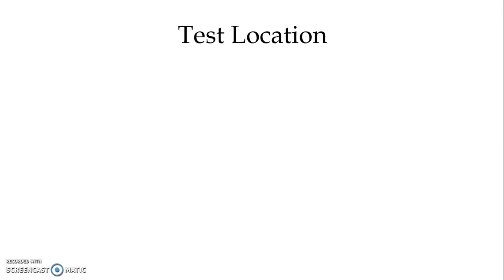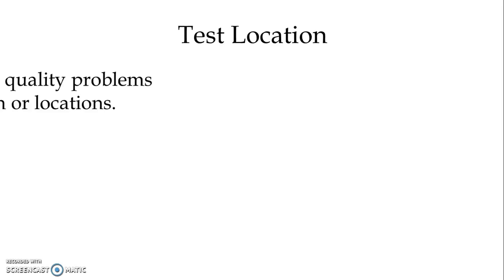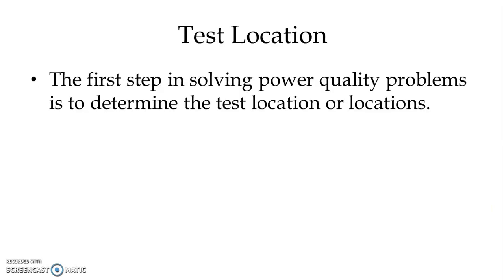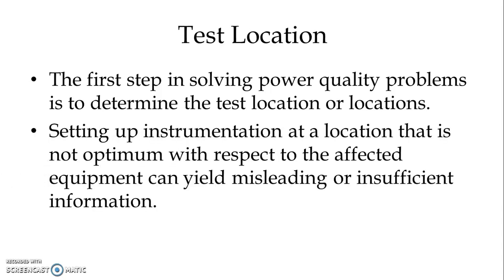First, we see the test location. While identifying power quality issues, the location for the test to be measured is very important. The first step in solving power quality problems is to determine the test location or locations. Setting up instrumentation at a location that is not optimum with respect to the affected equipment can yield misleading or insufficient information.